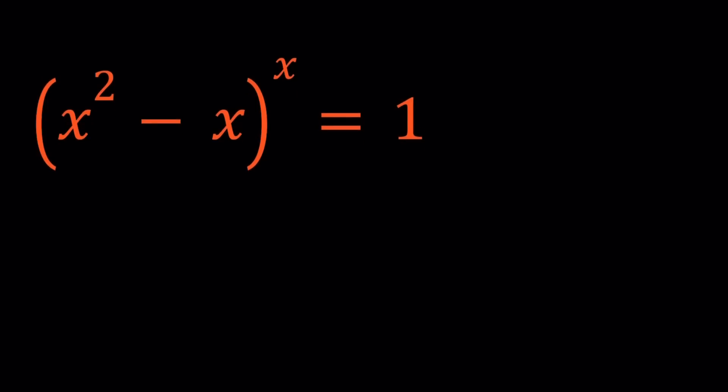I'm going to go ahead and take the natural log of both sides. ln of x squared minus x to the power x equals natural log of 1, which is equal to 0.